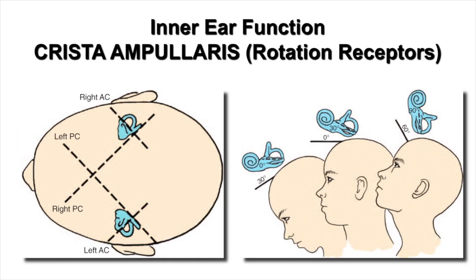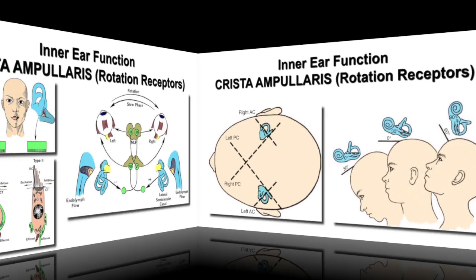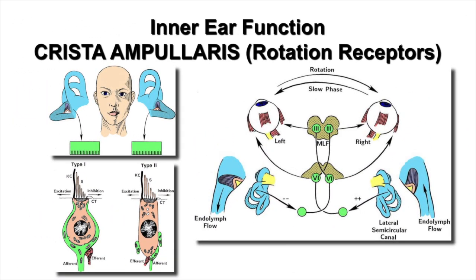Normally, we have five different balance receptors within each inner ear. Three are responsible for sensing rotational forces while the other two sense the force of gravity as well as acceleration and deceleration. Each receptor is paired with a specific receptor on the opposite side — the right superior semicircular canal is paired with the left posterior, and the left superior is paired with the right posterior. All ten vestibular receptors are constantly discharging and sending nerve impulses to the brain, even when we're sleeping or not moving.